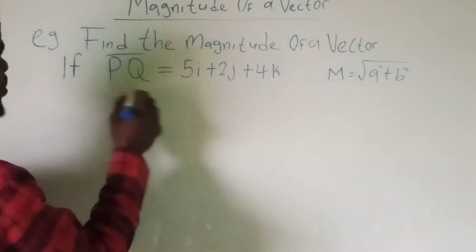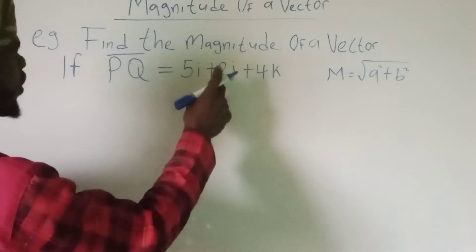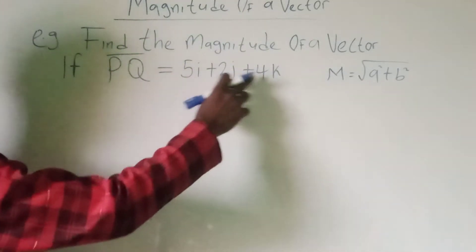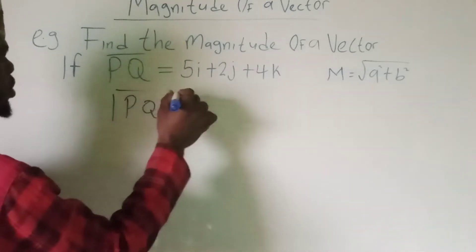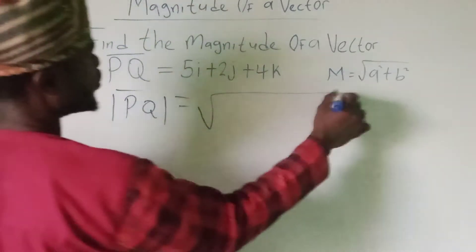Now example, if PQ is equal to 5I plus 2J plus 4K, so our magnitude is now equal to square root of